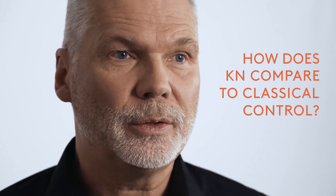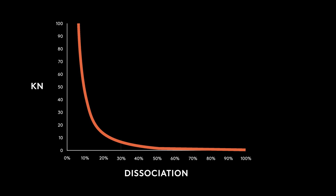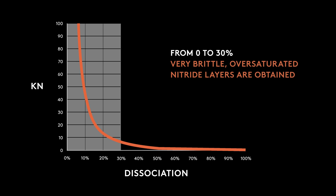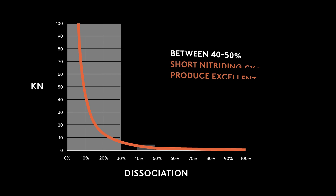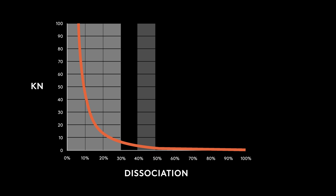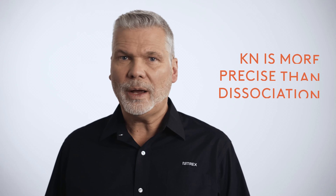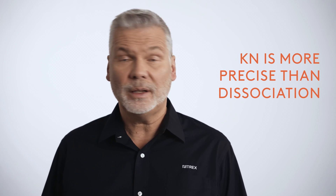But how does nitriding potential control compare to the classic control by the percentage of ammonia dissociation? Ammonia dissociation follows a straight line, but the resulting nitriding potential does not. From 0 to 30% dissociation we produce only very brittle oversaturated nitride layers. Between 40 and 50% of dissociation you can run many short nitriding processes with excellent results, but between 80 and 100% of dissociation there is hardly any nitriding going on — those are diluted atmospheres. The following table explains how nitriding potential compares to dissociation and why it is a much more precise method of measurement.